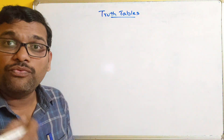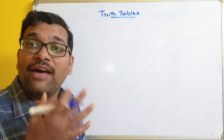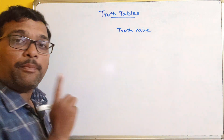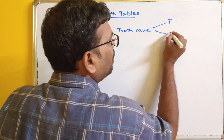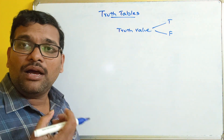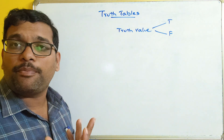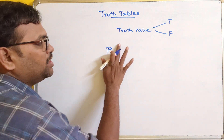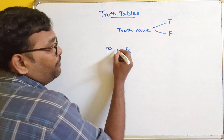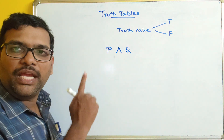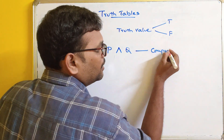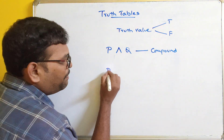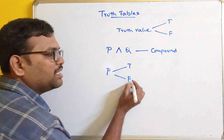So what is this truth table? Every proposition will have some result which we call a truth value. A truth value is a result of a proposition — it can be either true or false. If you have multiple propositions, a compound proposition means a combination of multiple simple propositions. For example, P and Q — P is one proposition and Q is another. So P and Q is a compound proposition, and its truth value will be either true or false.